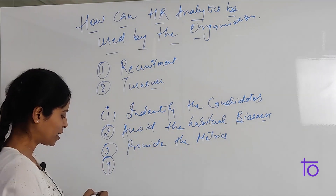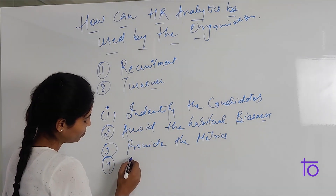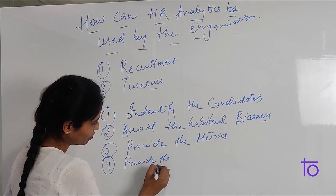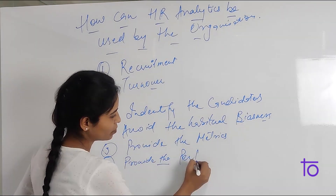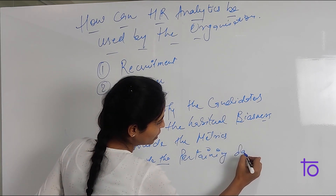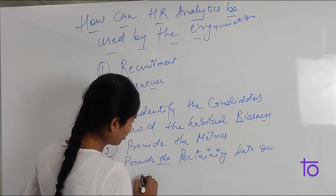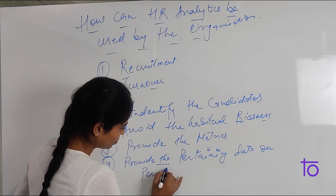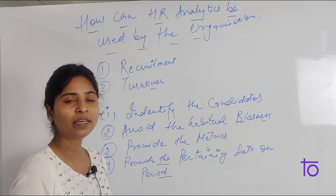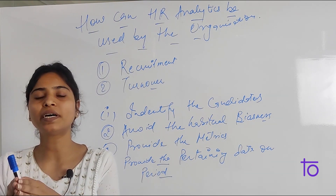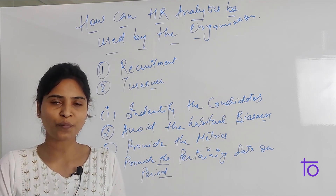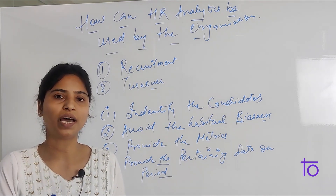The fourth point is to provide pertaining data on period — to learn where over-hiring and under-hiring actually happen, so that they can make a better plan for hiring.